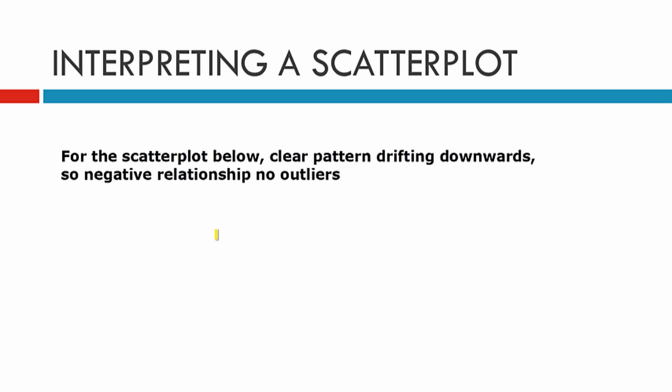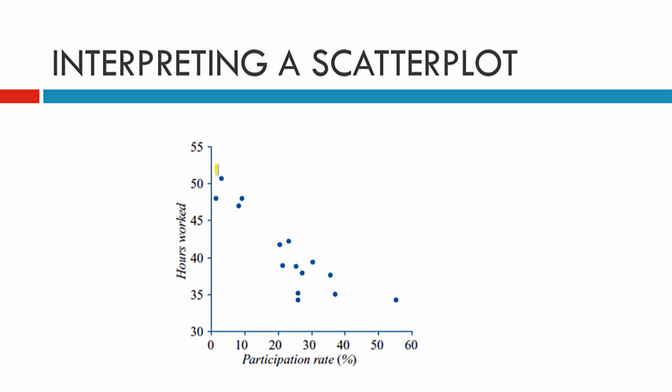The next one shows a clear pattern drifting downwards, which suggests a negative relationship. This graph will have no outliers, and you can see that if we draw a line through those dots it goes downwards. It is going down the hill, so it is a negative relationship.